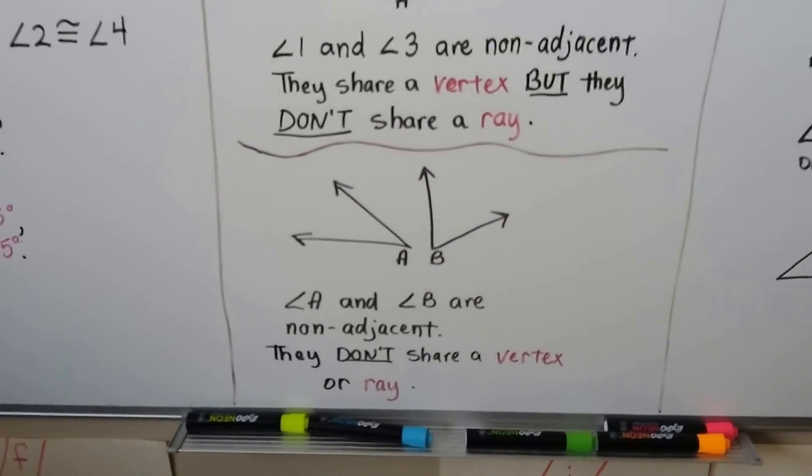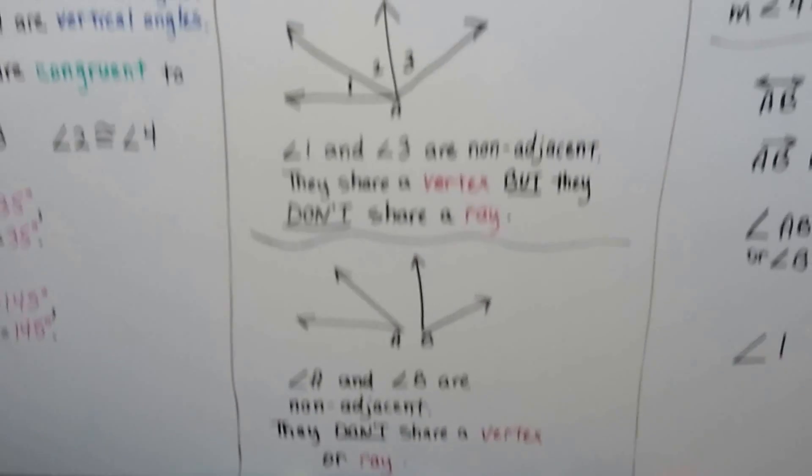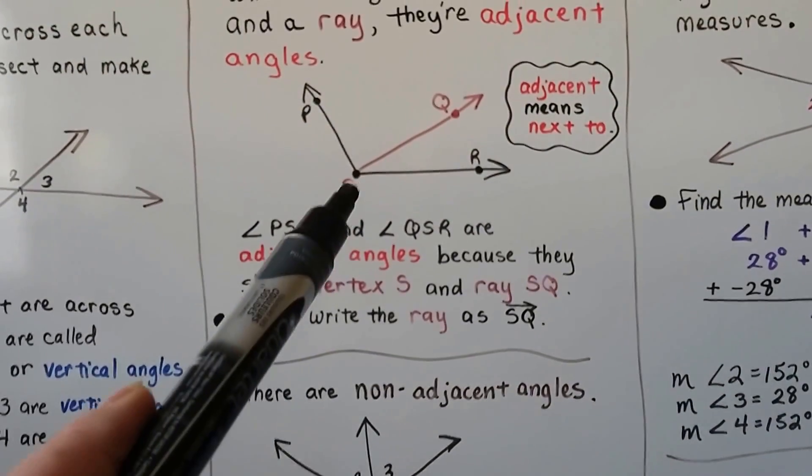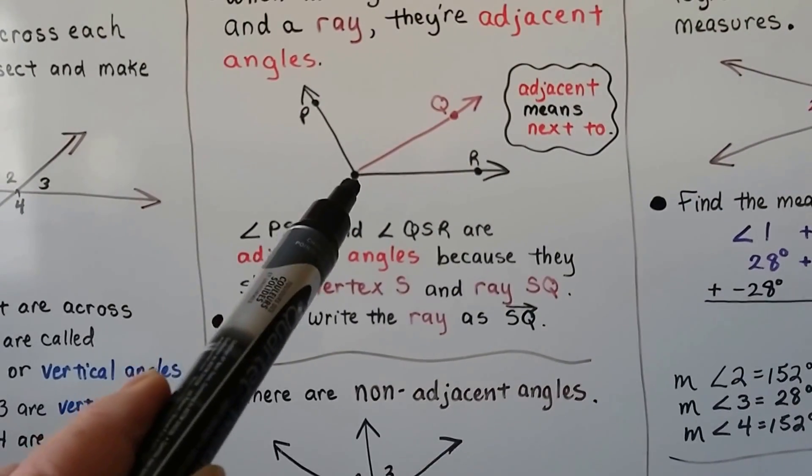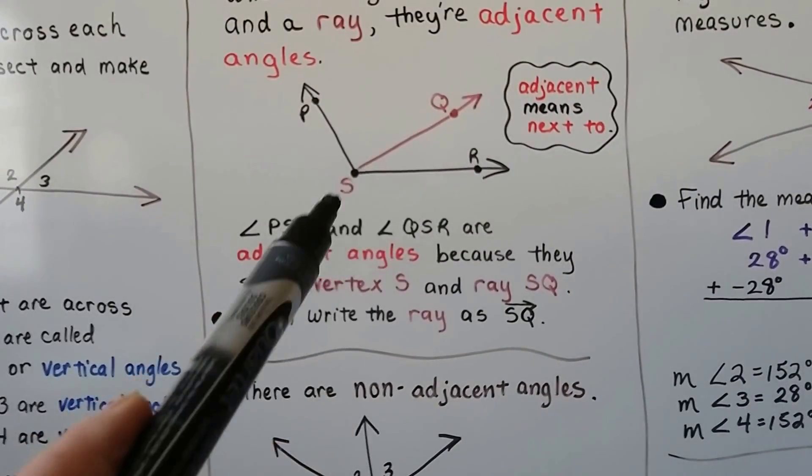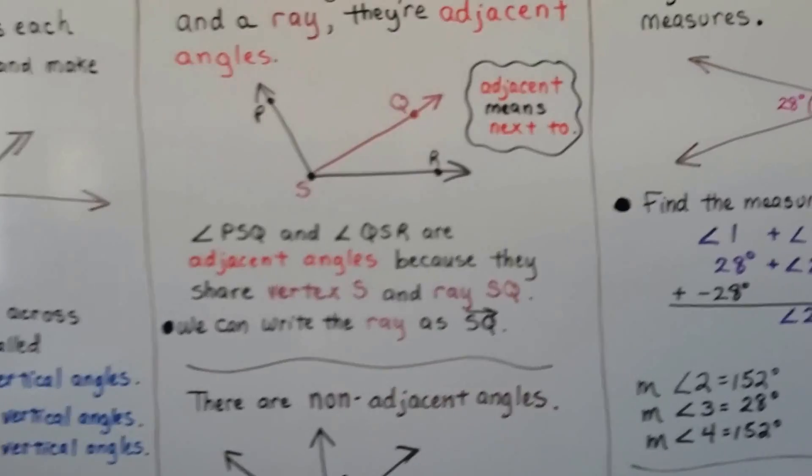It's got to have both — vertex and shared ray. In order to be adjacent, they have to share the vertex and the ray.